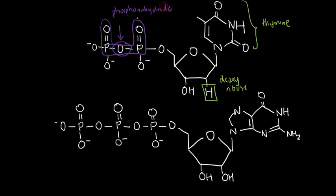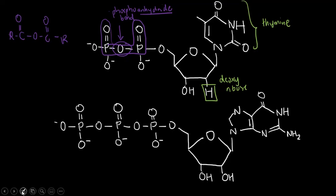Why is it called a phosphoanhydride? I included two P(=O) groups to resemble an anhydride. Remember, an anhydride is R-C(=O)-O-C(=O)-R — like twin towers — and that's what you see here, but with phosphates instead of carbons. This is very important because phosphoanhydride bonds are described as high-energy bonds. The more phosphates a nucleotide has, the more potential energy it contains — which becomes important when discussing metabolism.